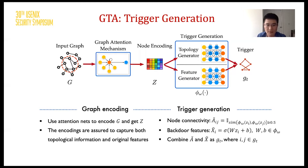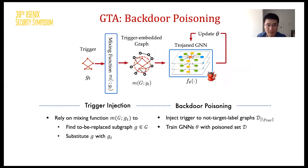The feature generator searches for new features for an effective attack. We then combine the generated topology and features as a generated trigger. We use generators rather than a predefined trigger because we want to tailor a trigger for each graph. When we talk about optimizing the trigger, we actually refer to optimizing those generators. After getting a trigger gt, we rely on a mixing function to find a suitable locality in the graph and replace the original subgraph with gt.